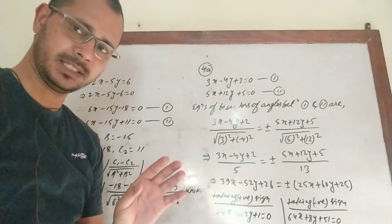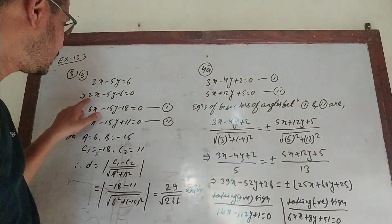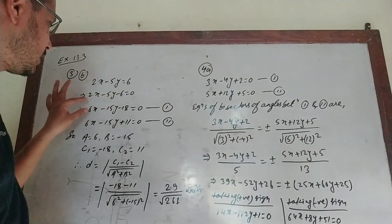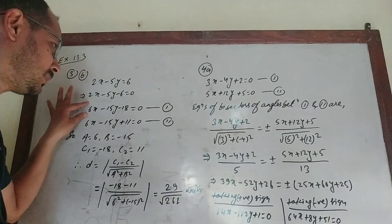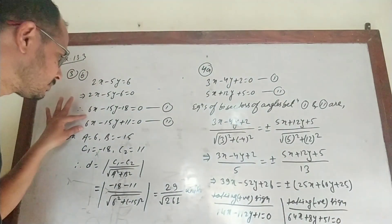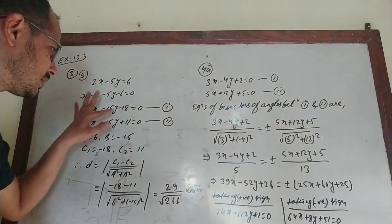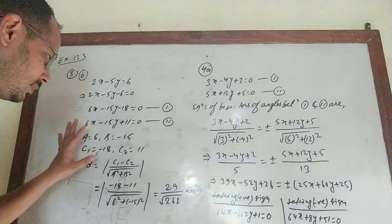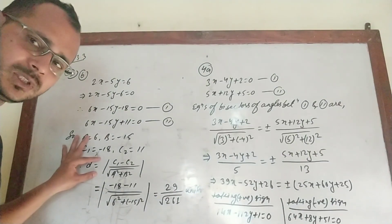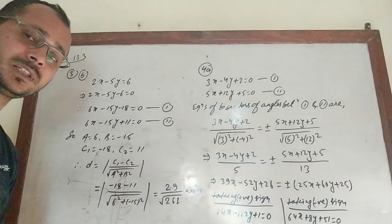To apply the formula, we multiply the first equation by 3: 3×2 = 6, 3×5 = 15, 3×6 = 18, giving equation 1: 6x − 15y − 18 = 0. Equation 2 is: 6x − 15y + 11 = 0. Now a = 6, b = −15, c1 = −18, c2 = 11. Applying the perpendicular distance between two parallel lines formula, substituting and simplifying gives the answer: 29 / √261.